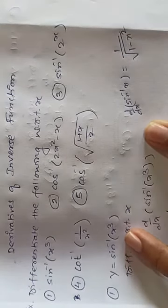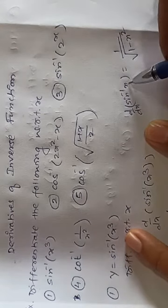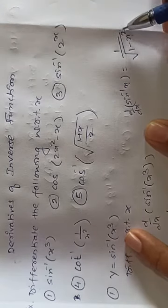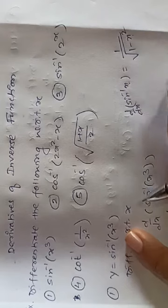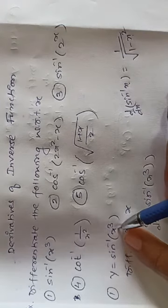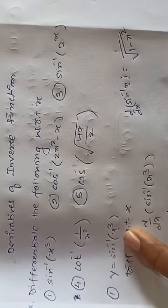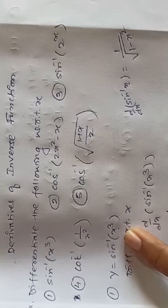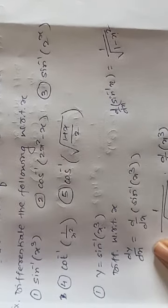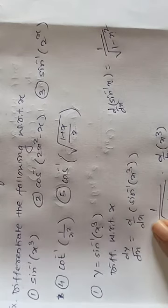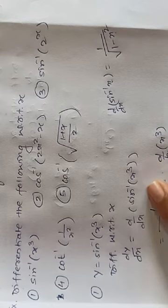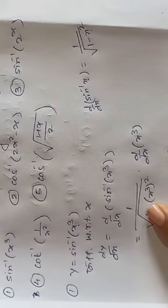Now look, when we apply this for composite functions - here x is there, but in place of x, what do we have? We have x cube. That means wherever x is, we put x cube. Do you understand what I'm saying? Wherever x is, we put x cube. So now what will happen? The rest of the steps we'll write here. So differentiate with respect to x, dy/dx equals derivative of sin inverse of x cube.